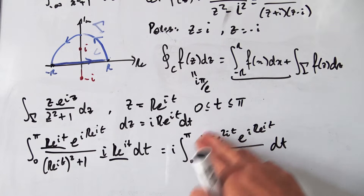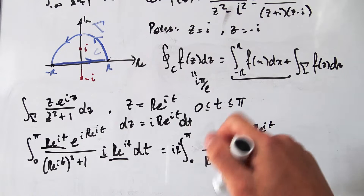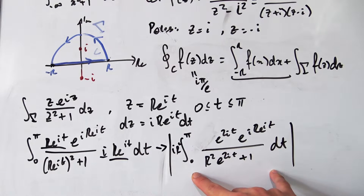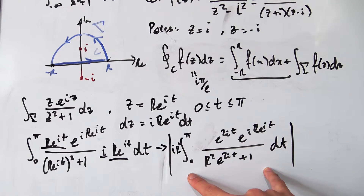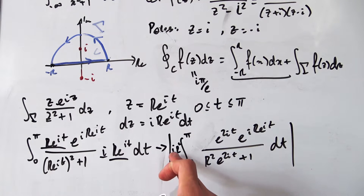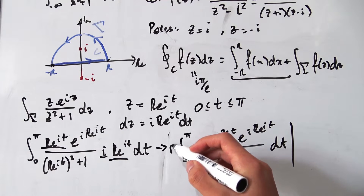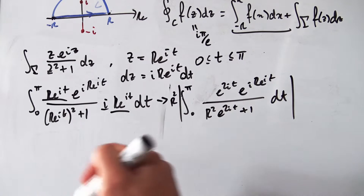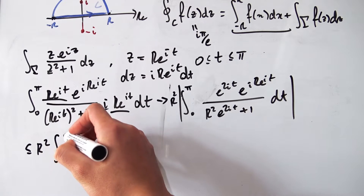Now we start estimating the value of this integral. Replacing the equals sign with an inequality, we take the absolute value of the whole thing. The absolute value splits into |iR²| times the absolute value of the integral. Since |iR²| = R², we have R² times the absolute value of the integral, which by the integral inequality is less than or equal to R² times the integral of the absolute value of the integrand.